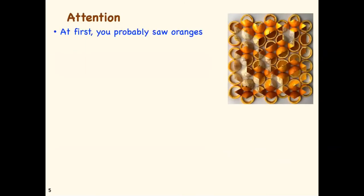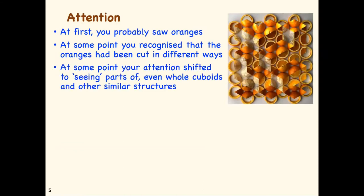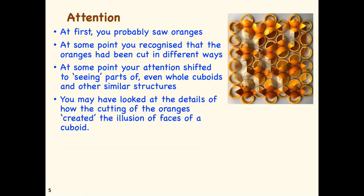At first you probably saw oranges. At some point you recognized that the oranges have been cut in different ways. So you might attend to a particular orange and then another orange and then compare how the two oranges have been cut and how they're cut differently. At some point your attention shifted to seeing parts of even whole cuboids and other similar structures. But you and I know that they're not actually there. It's your brain which is interpreting them as being there. You may have looked at the details of how the cutting of the oranges actually created the illusion of faces of a cuboid.